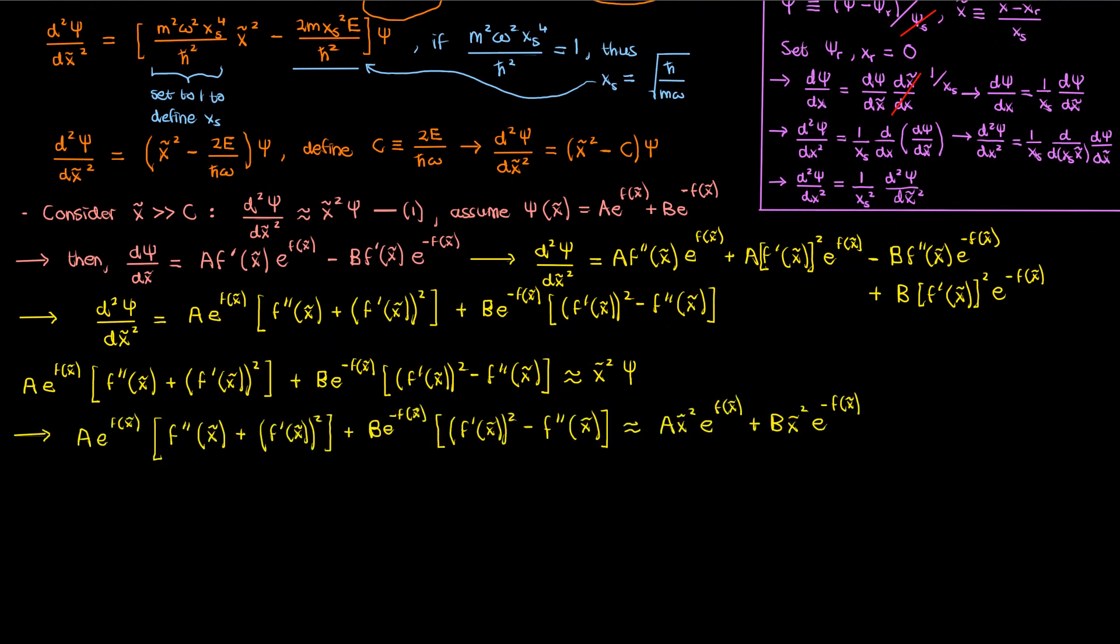Now if we look at the parts multiplying e to the f and e to the negative f on both sides we can form these two equations involving the function f. The first equation corresponds to the e to the f while the second equation corresponds to the e to the negative f. We can then add these two equations to get the following equation in terms of f prime.